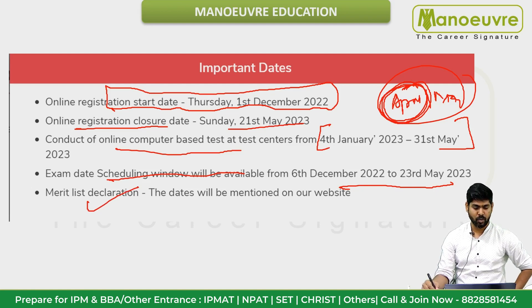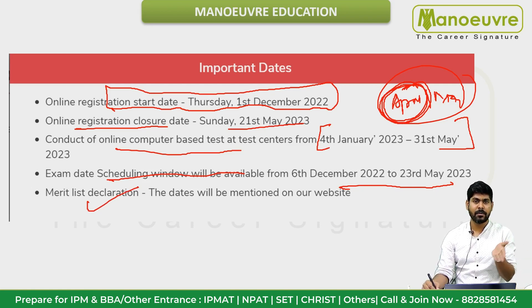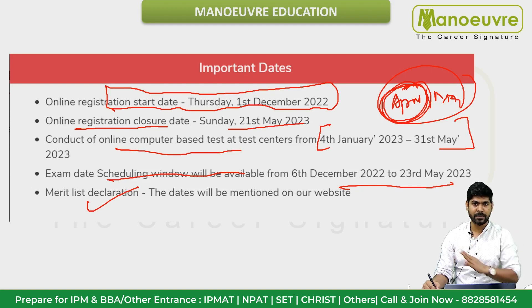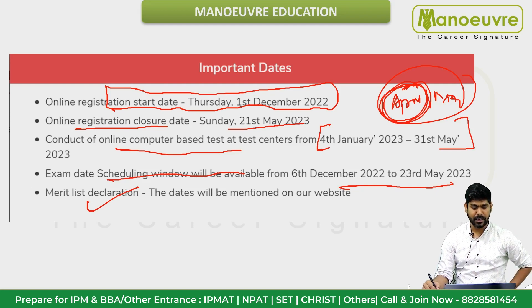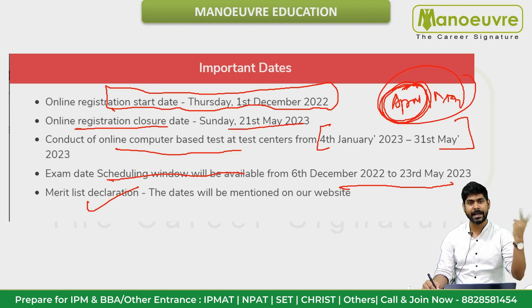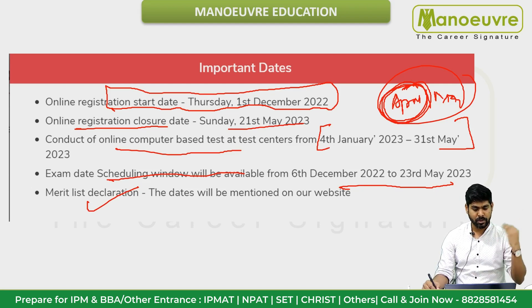For campus preference: Mumbai is the top campus, Bangalore is second, Navi Mumbai is third, and Indore is fourth. The scores required depend on which campus you are targeting.